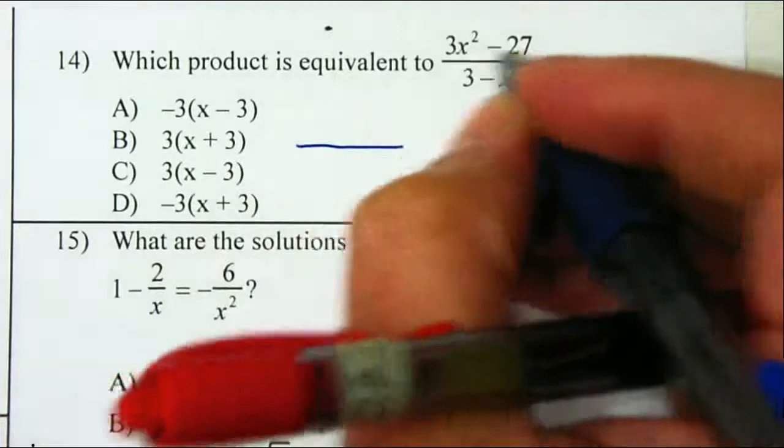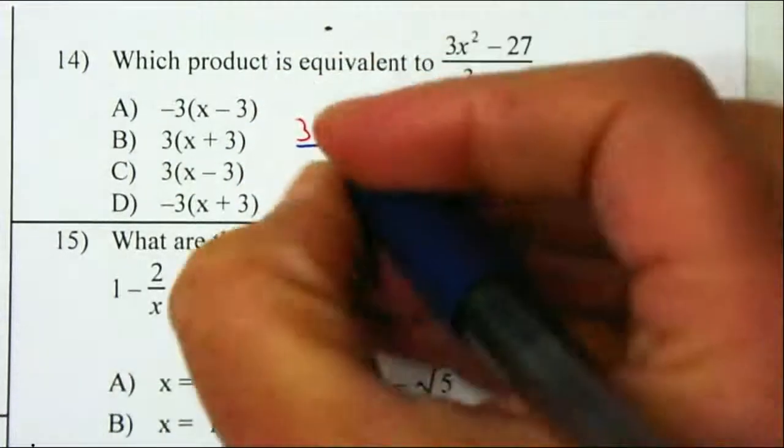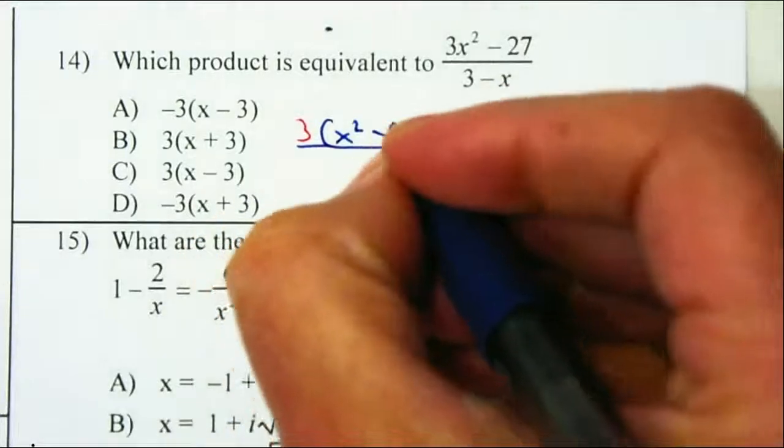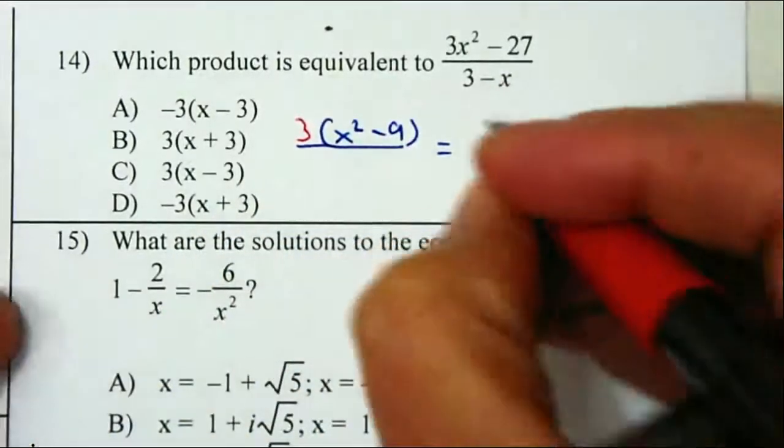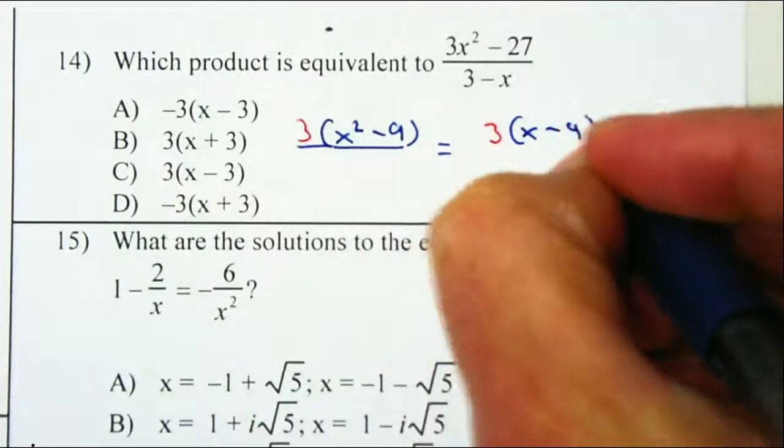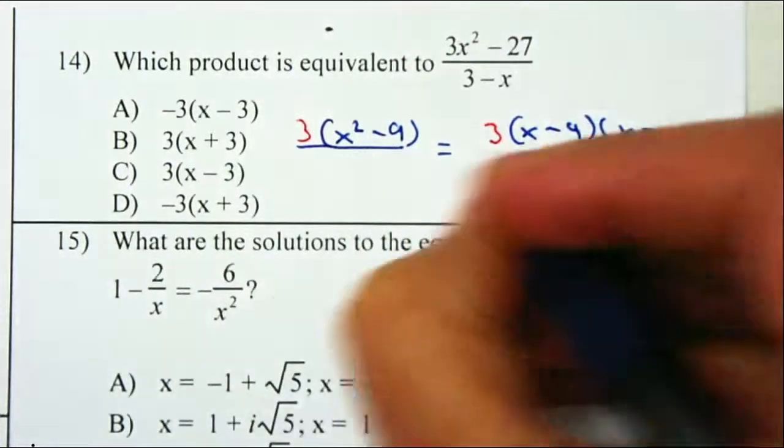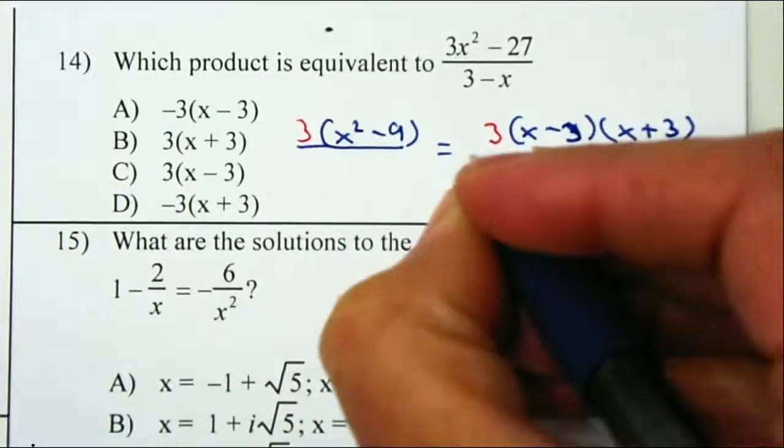On the numerator, I can factor out a 3, and what's left behind we have x squared minus 9. You should be able to notice that this is the difference of two squares, x squared minus 9. So we have 3 times x squared minus 9, which factors to x minus 3 times x plus 3. On the denominator...